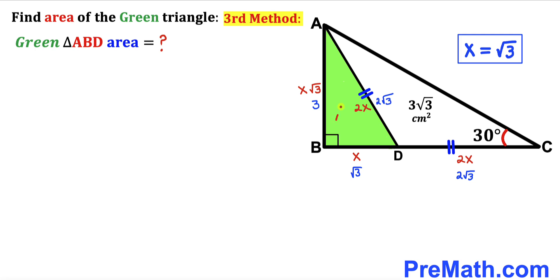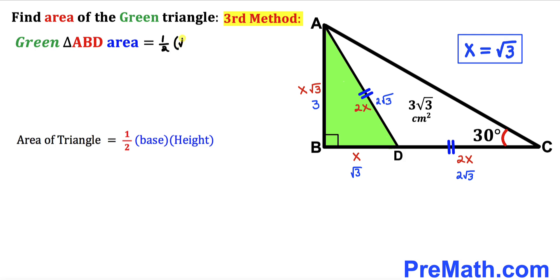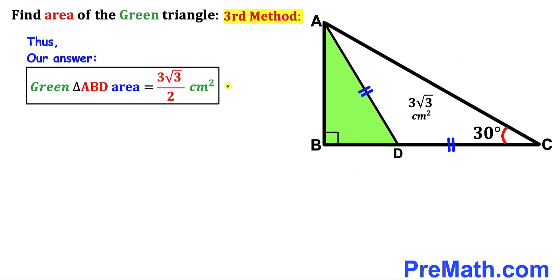For the third method, let's directly calculate the area of the green shaded triangle ABD using the formula: area = ½ × base × height. The base of this green triangle is √3 and the height is 3, so the area is ½ × √3 × 3, which simplifies to 3√3/2 centimeters square. Thus the area of the green triangle ABD is 3√3/2 centimeters square by the third method as well. Thanks for watching and please don't forget to subscribe for more exciting videos!